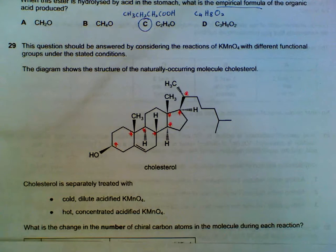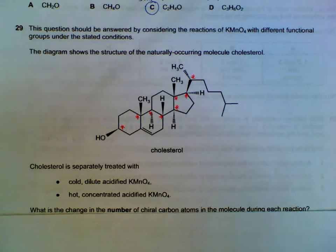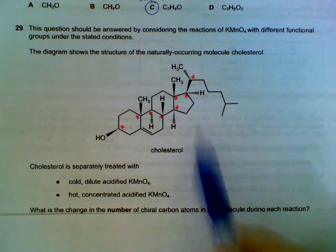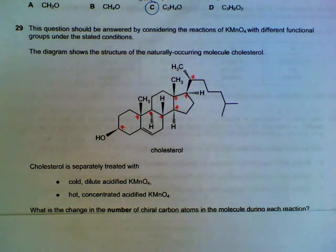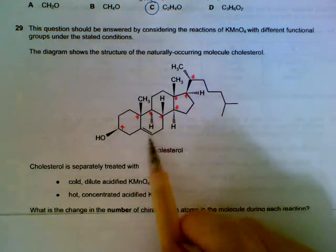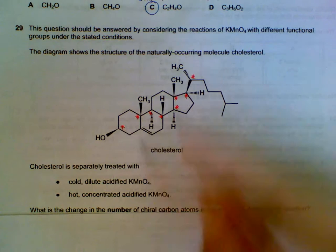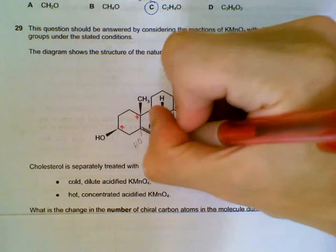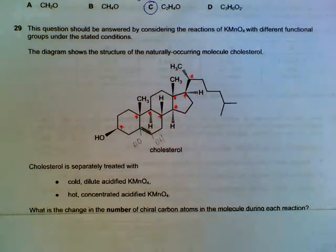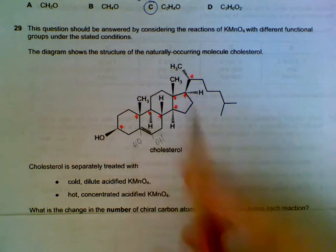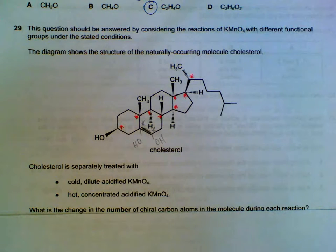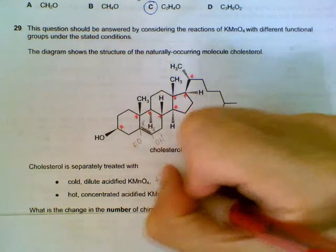29, we have this molecule and we have the chiral carbon marked out in the red asterisk here. Now what happens when we treat them with cold dilute KMnO4? When it's cold dilute, what happens will be at this double bond here. There will be a diol formed, OH, OH. And once these two are formed, we actually have 2 more chiral centers. So, plus 2 chiral centers.